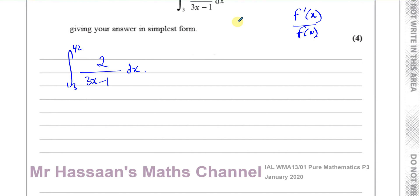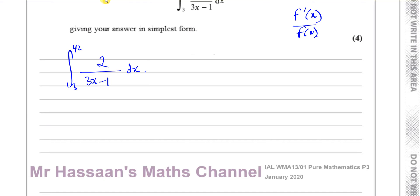It's based on the fact that if we differentiate ln x with respect to x, we get 1 over x. So if we integrate 1 over x, we get ln of the modulus of x.